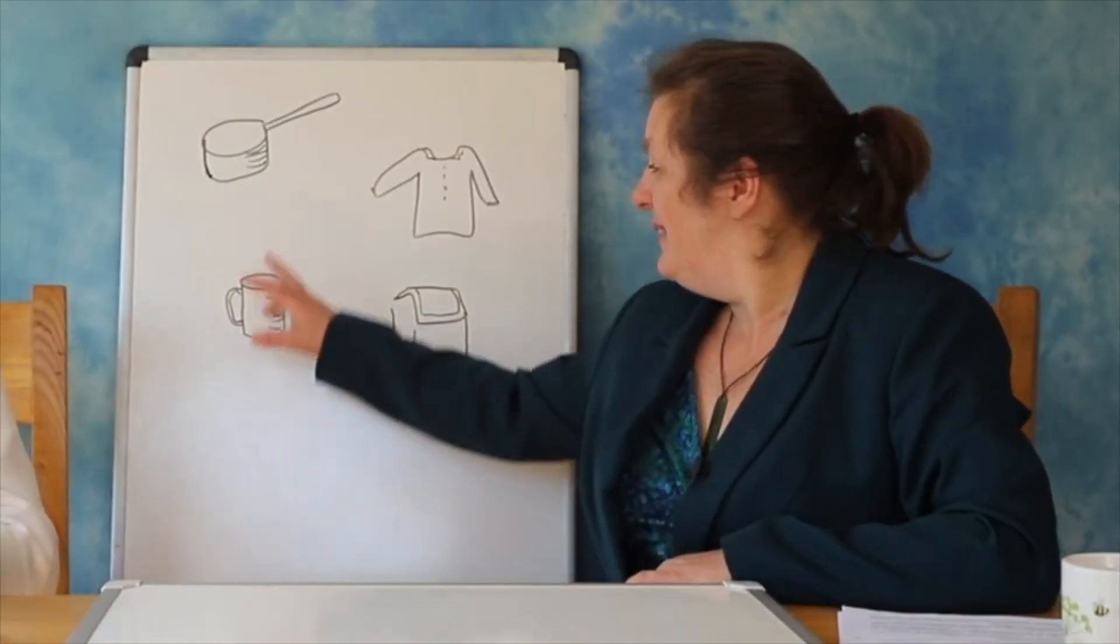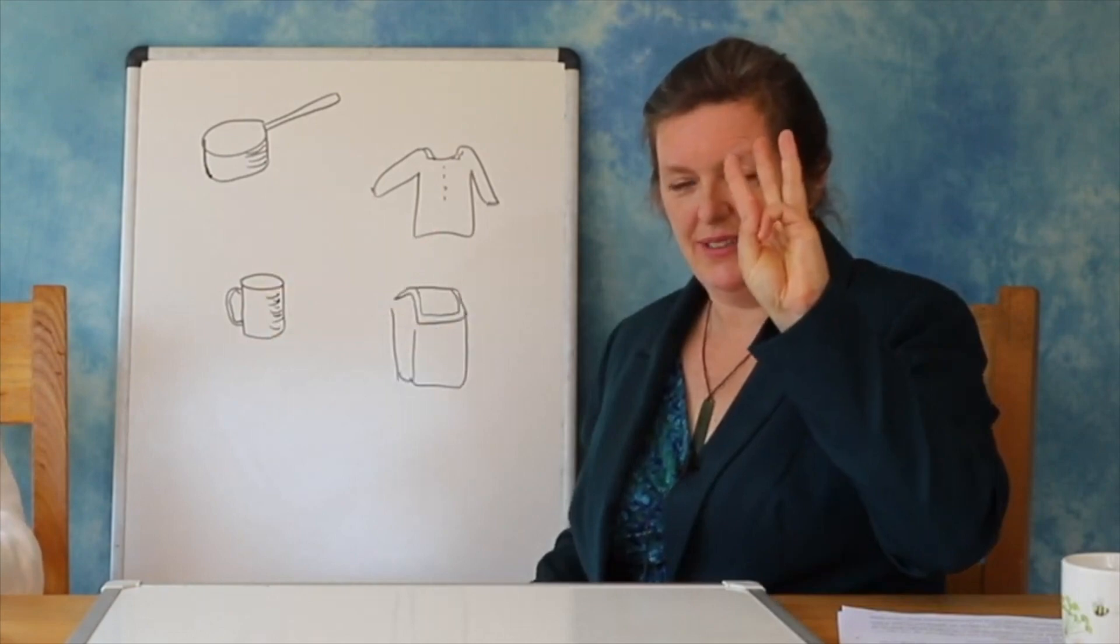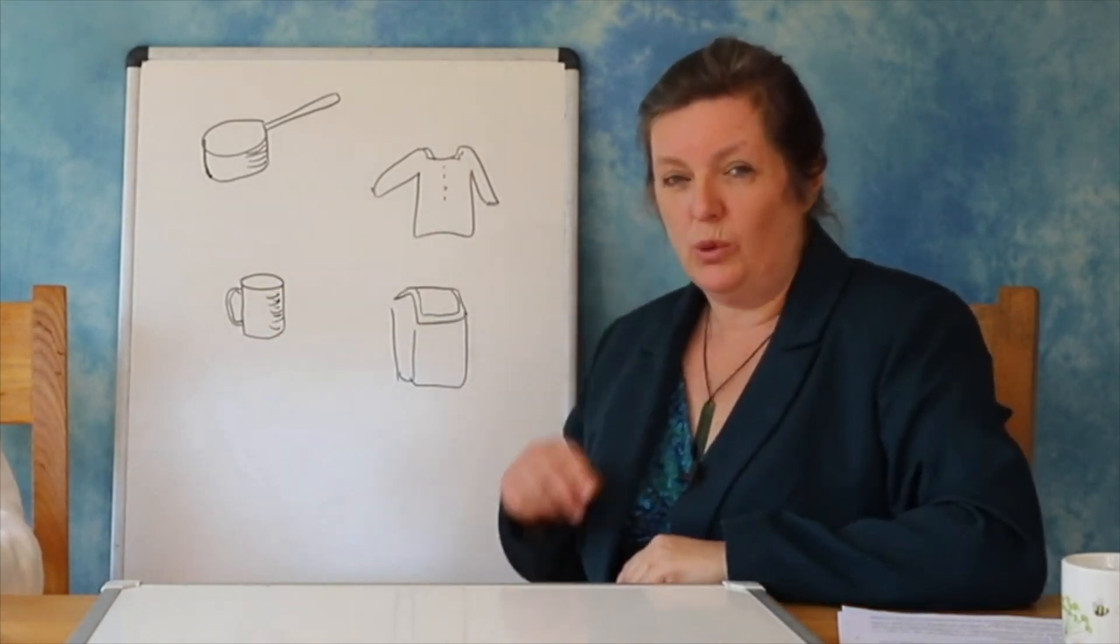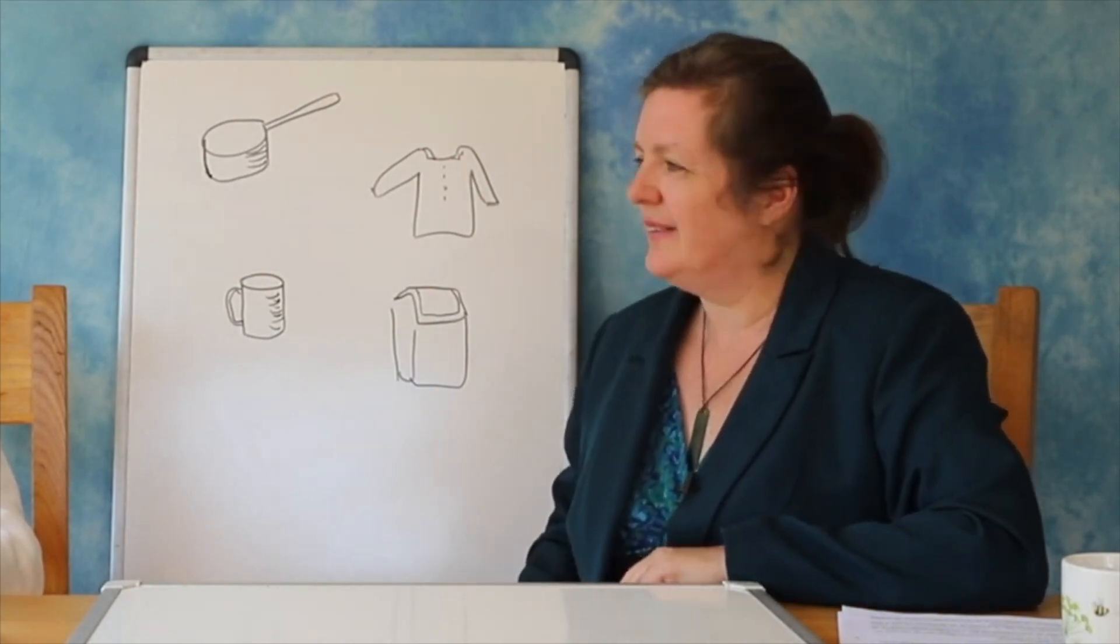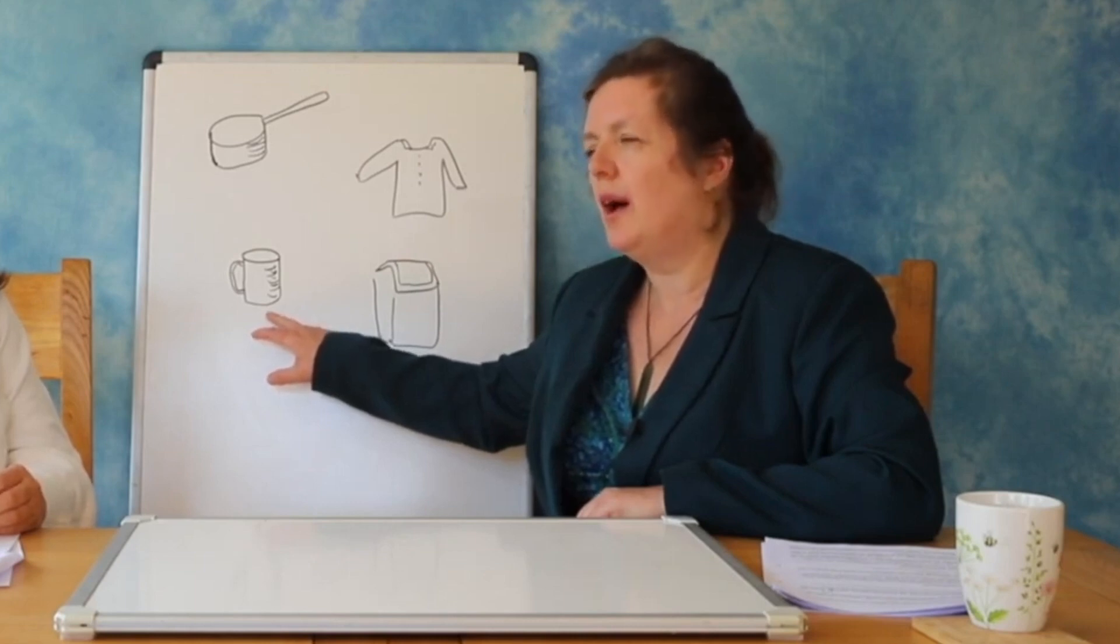So these words have one syllable and three letters. And you can learn to listen to work out what the letters are. So cup: k, a, p, cup. K, a, p.